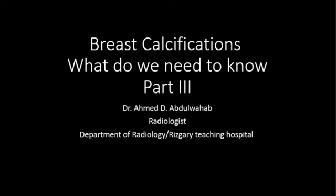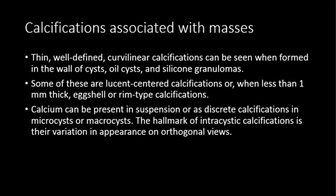Good morning everyone. Today we will continue with our presentation on breast calcifications — the mammographic evaluation of breast calcifications. Last time we talked about the different patterns of benign breast calcifications. Now we will continue talking about calcifications associated with masses. By masses we mean any space-occupying lesion; it can be soft tissue or cystic — even a cyst is a mass if it's a space-occupying lesion. Let's start with benign masses.